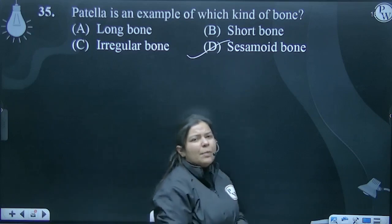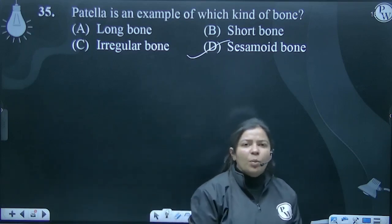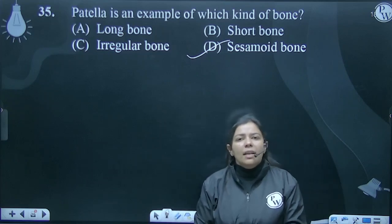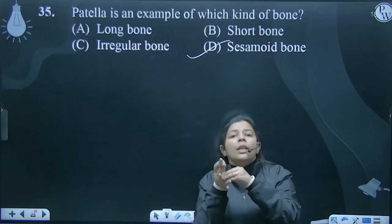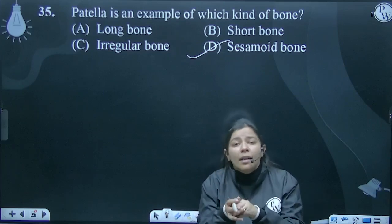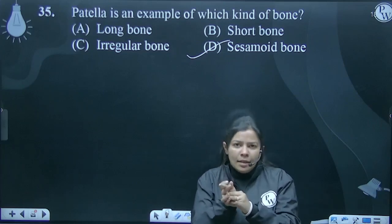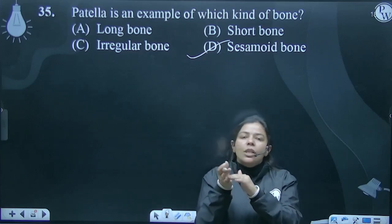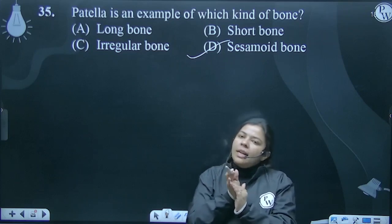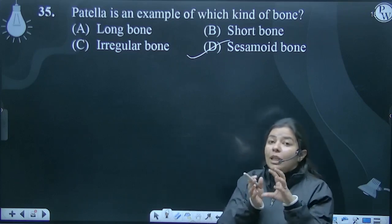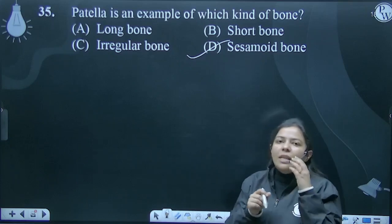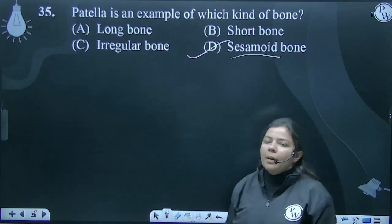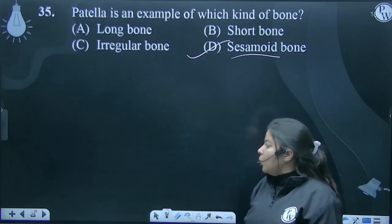Sesamoid bone is a type of bone which is embedded in a tendon, or partially fused with a tendon, and it is particularly located at the place of a joint. So, patella is a type of sesamoid bone.